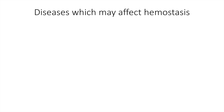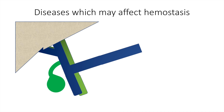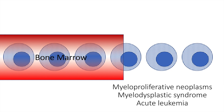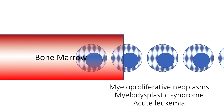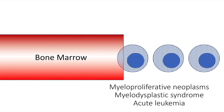The patient may also have diseases which affect hemostasis, such as cirrhosis of the liver, which can cause bleeding manifestations. The patient may have defects or disorders of the bone marrow which can cause bleeding disorders. These include myeloproliferative neoplasms, myelodysplastic syndromes, and acute leukemia.